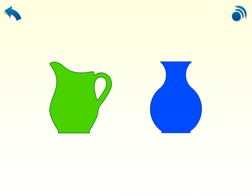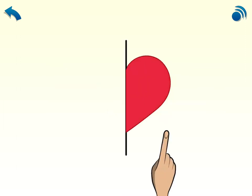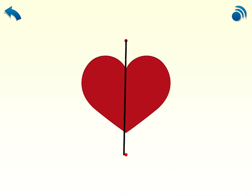Here's the heart again. First, I draw a straight line from dot to dot. Now I touch the shape to fold it. The two halves match exactly. So my line is a line of symmetry. Your turn. Draw a line. Now touch the shape. The two halves match exactly. You drew the line of symmetry.